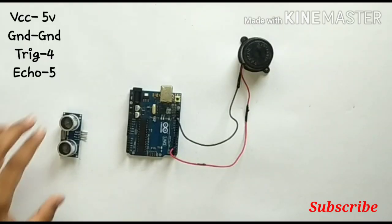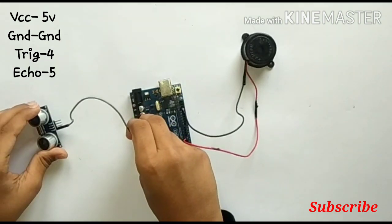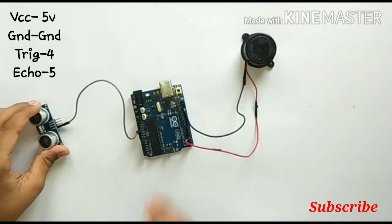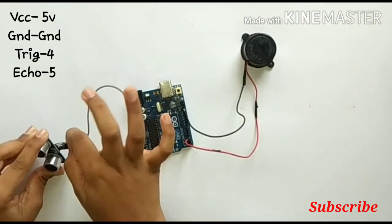Now connect the VCC pin of the ultrasonic sensor to 5 volts. Now connect the trigger pin of the ultrasonic sensor to digital pin number 4.